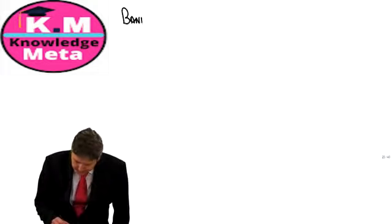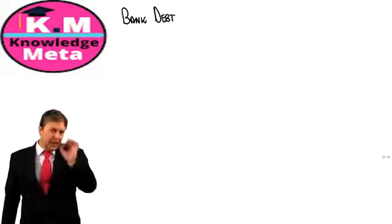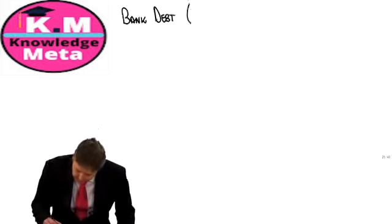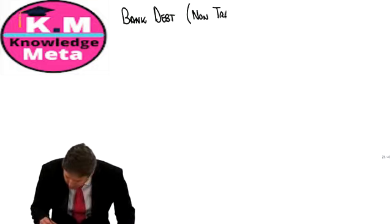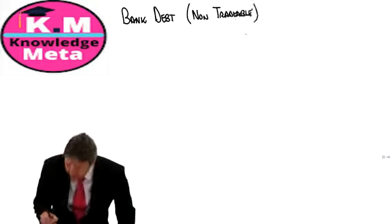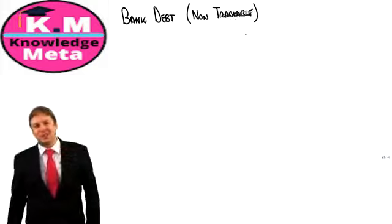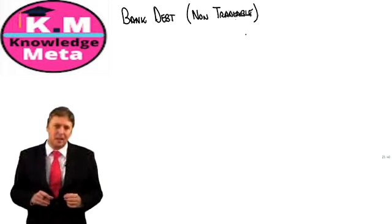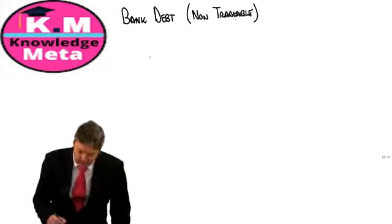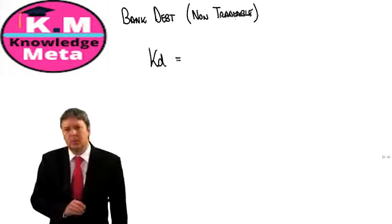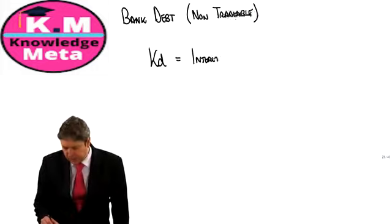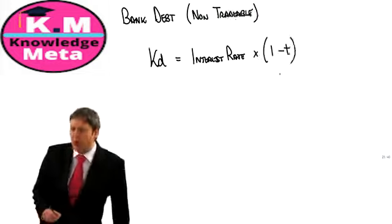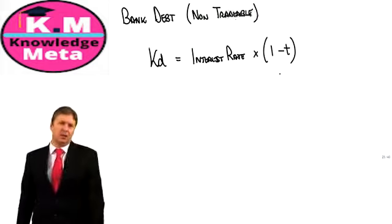Now let's look at bank debt. The critical issue about bank debt is that it is non-tradable. From that perspective there's no change in market value, so you don't get hung up about it. KD is very straightforward: it's simply the interest rate multiplied by (1 − T), where T is the tax rate. Nothing could be easier.